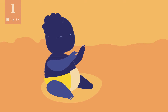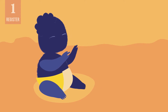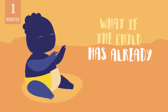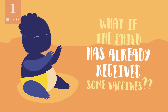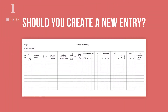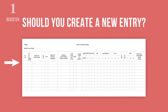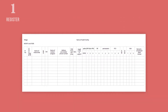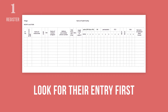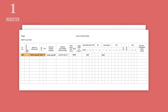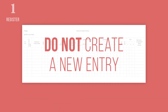What do you think you should do if a six-month-old infant arrives at the health facility and the child has already received some vaccines? Should you create a new entry for that infant? The infant may already be listed in a register — look for the entry. If you do not see the infant's name, it is possible the infant received immunizations at another health facility and is registered there. In that case, do not create a new entry in your register for the infant.